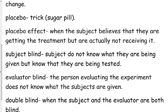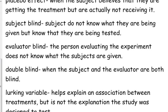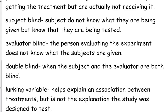Subject blind does not mean the subject is physically blind — it just means they don't know what they're getting. They could be getting the placebo or the actual treatment. Same thing with the evaluator: they just don't know what the subject is receiving. If both are true, then you have what we call a double-blind study. That's typically preferable — the subject doesn't know, and the evaluator also doesn't know. Sometimes it may bias their reports if they know which group is getting the treatment and which group is not.